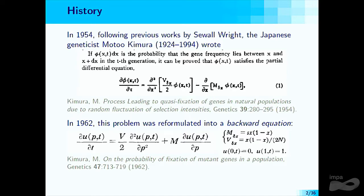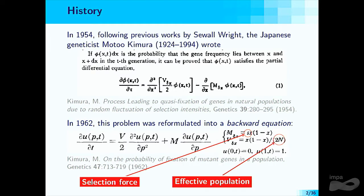In the reformulation, the equation became well known — 90% of evolutionary biologists work with what is now called the Kimura equation. The two parameters appearing in the equation are: the selection force, which measures the strength of natural selection, and the effective population, which is directly related to the size of the population in a naive sense, though it is a quite confusing concept.